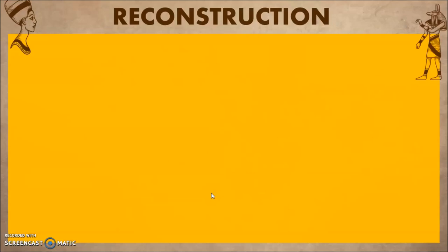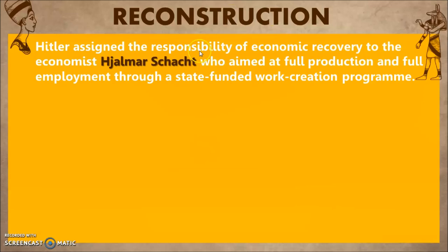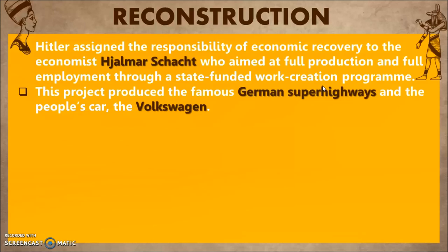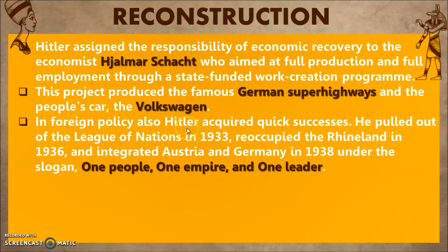Now let's discuss reconstruction — rebuilding what had been weakened. Germany's economy was very weak after 1929 and the Treaty of Versailles. Hitler assigned the responsibility of economic recovery to economist Hjalmar Schacht, who aimed at full production and full employment through a state-funded work creation program. This program was focused on two things: developing super highways (autobahns) and producing the people's car — the Volkswagen, which is still a famous German car brand today.